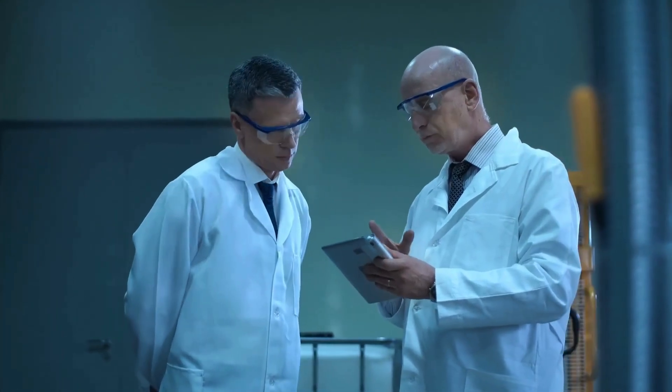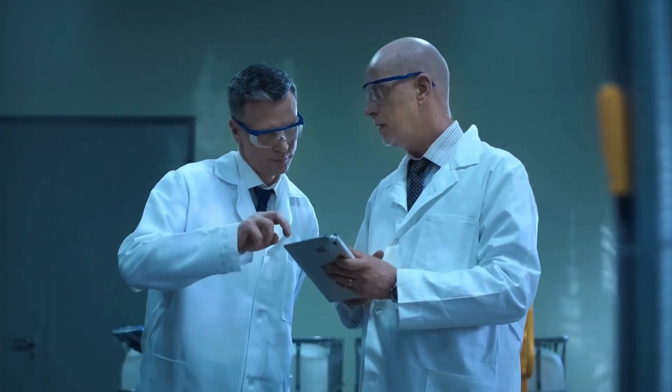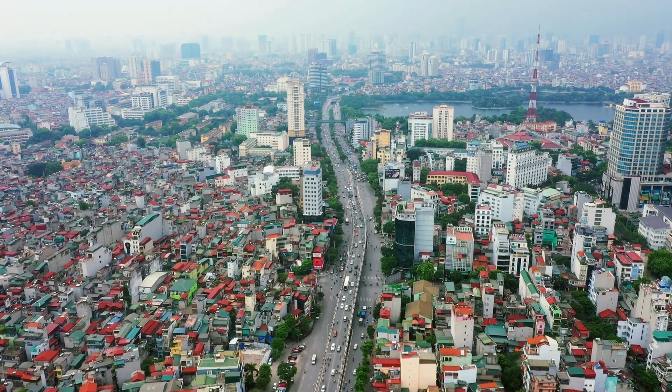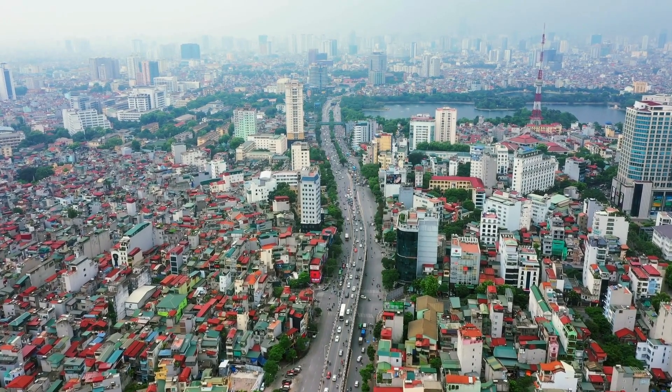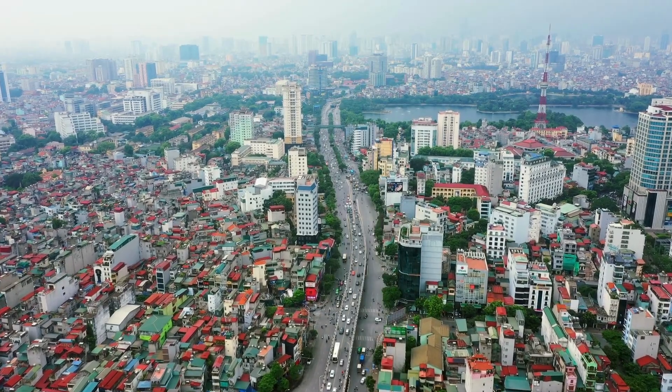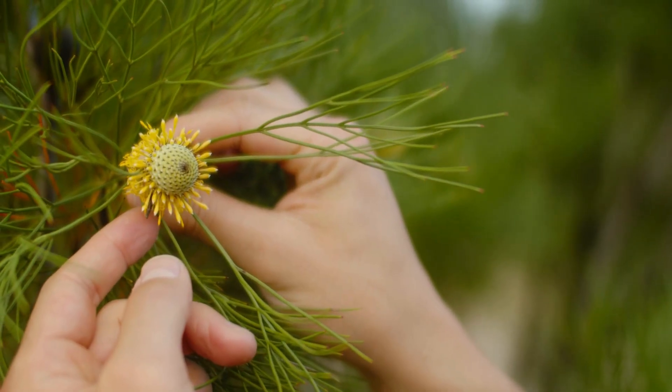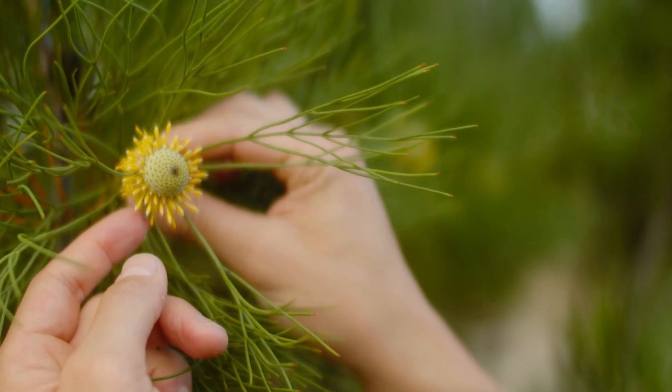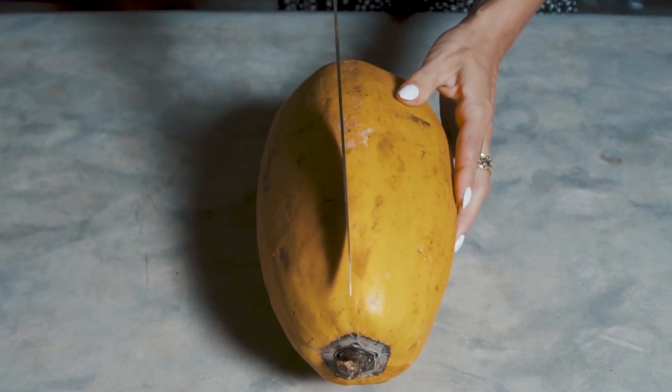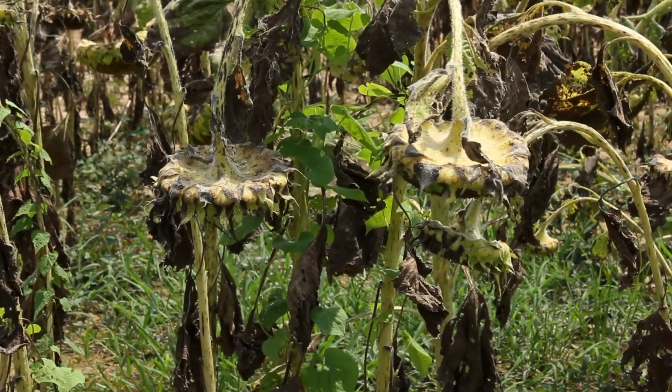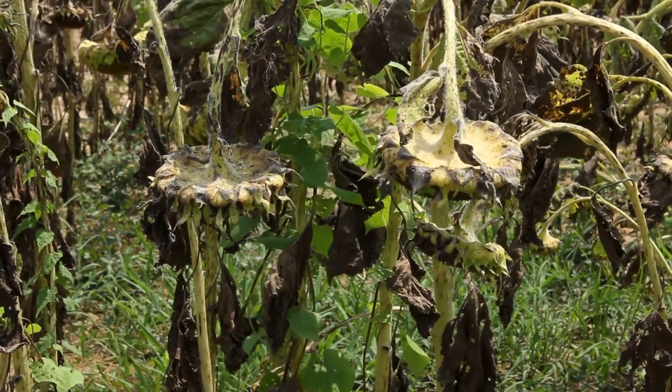By noon, the police cordon off the site and scientists from the nearest university arrive with tape measures and notebooks. They measure the sphere's diameter, just under 30 centimeters, and note its seamless surface, free of welds, rivets, or any sign of assembly. A botanist kneels to inspect the grass beneath. Every blade within a meter-wide ring is wilted, gray, and brittle, forming a perfect circle of dead vegetation.